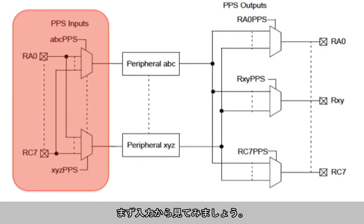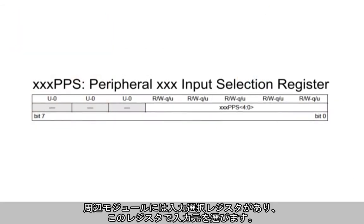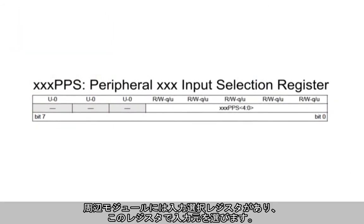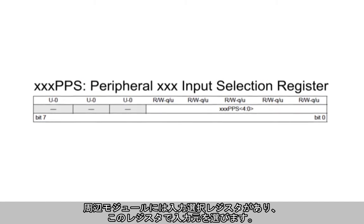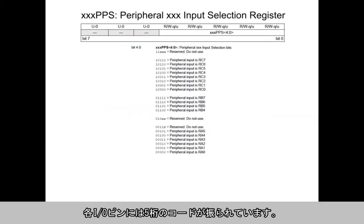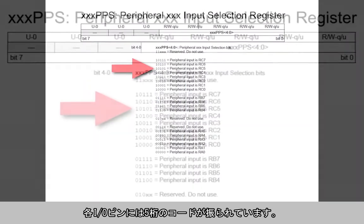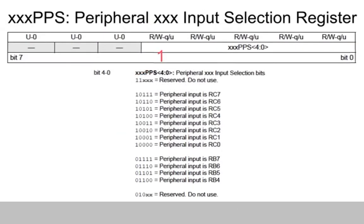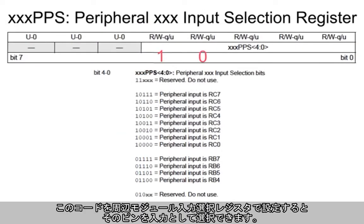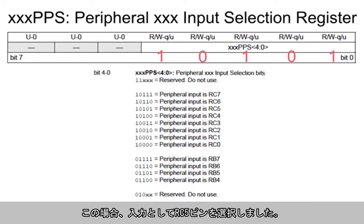Let's look at the input connections first. Each peripheral has a peripheral input selection register to select the input connection. Each I/O pin is assigned a five-digit code, and by placing the correct five-digit code into the peripheral input selection register, that pin is selected as the input. In this case, we've selected the RC5 input.